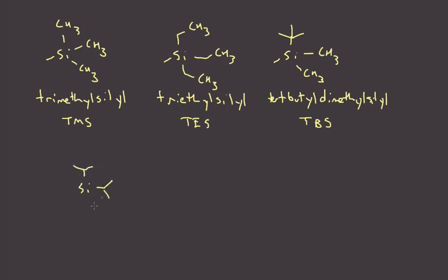You can keep going. You can have three isopropyl groups. This is the triisopropylsilyl group, abbreviated as TIPS. And then the granddaddy of them all is the one where you have a tert-butyl and then two phenyl substituents. This is the tert-butyldiphenylsilyl, abbreviated as TBDPS. This one is incredibly stable. Actually both TIPS and TBDPS are both very stable.